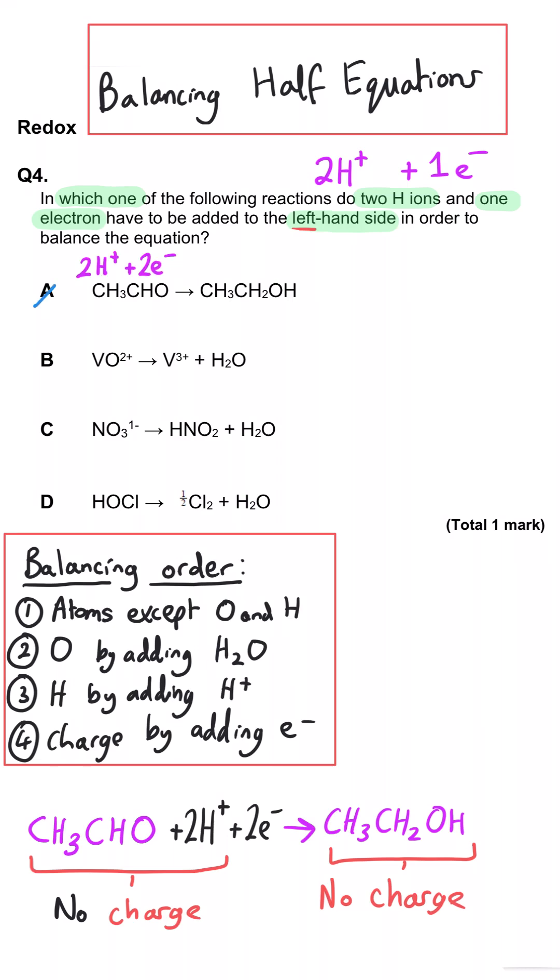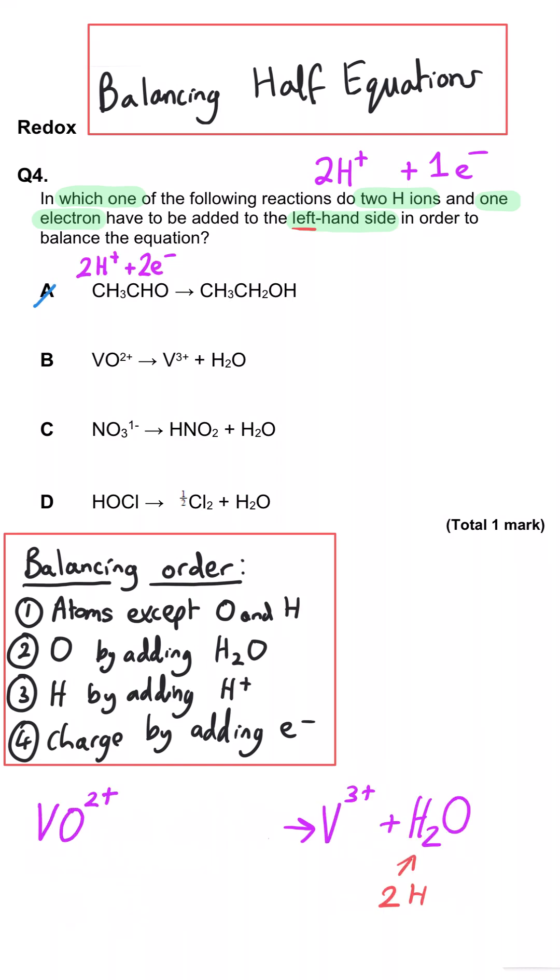And so A is not right. In B, we need to add two hydrogen ions to the left-hand side to balance the hydrogen atoms. And then the charge is currently plus four on the left-hand side and plus three on the right. So one electron will balance this. And so B is the correct answer.